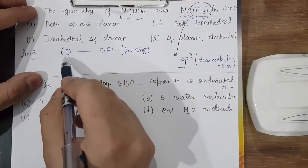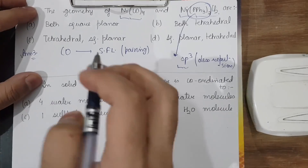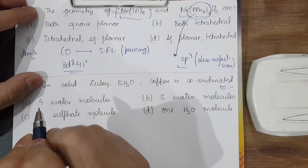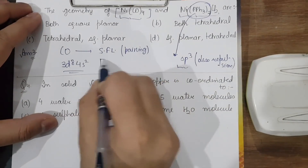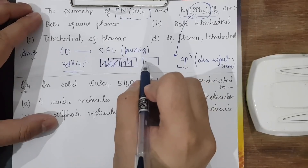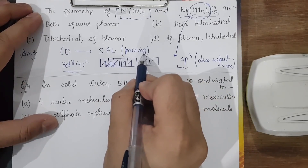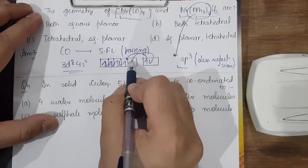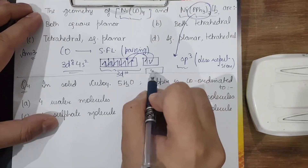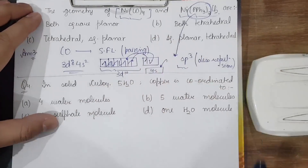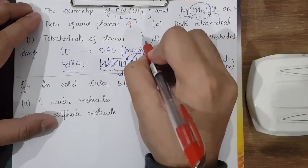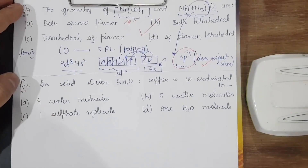For Ni(CO)₄: Ni is 3d⁸4s². With a strong-field carbonyl ligand, pairing occurs — the 3d becomes completely filled (3d¹⁰) and 4s becomes empty, then gets filled giving sp³ hybridization — so tetrahedral. For Ni(PPh₃)₂Cl₂, the bulky PPh₃ groups also prefer sp³ hybridization. Therefore both complexes are tetrahedral in nature.